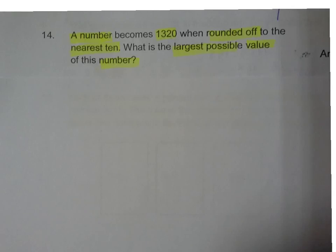Okay, this question talks about rounding off to the nearest. The number is 1320 when rounded off to the nearest tenths, and they want the largest possible number.